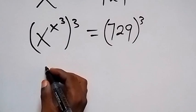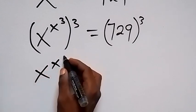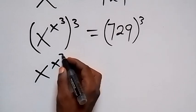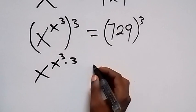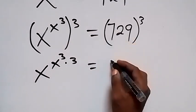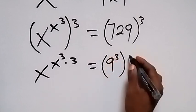So this gives us X raised to power X raised to power 3, then multiplied by 3. When the powers multiply, this equals 9 raised to power 3, then raised to power 3.